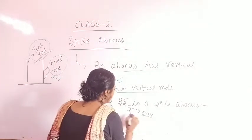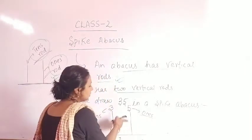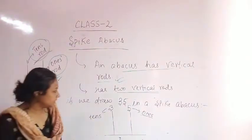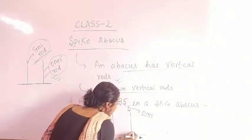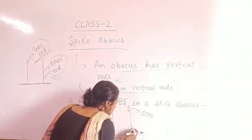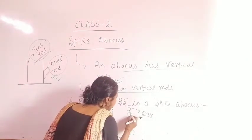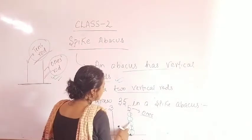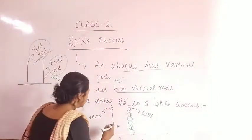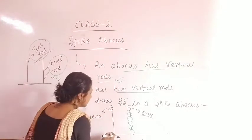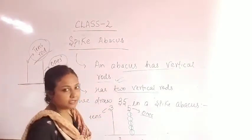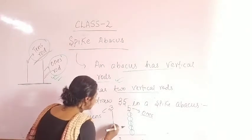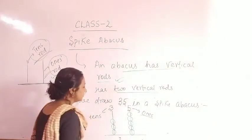First we draw 5 beads on the 1's vertical rod: 1, 2, 3, 4, and 5. Then for 3 in the 10's place, we draw 3 beads on the other vertical rod: 1, 2, and 3.